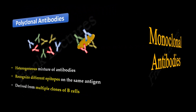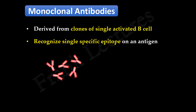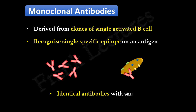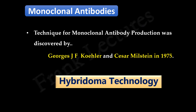Today we will study monoclonal antibodies. As the name reflects, monoclonal antibodies are derived from the clones of a single activated B cell. So these antibodies will recognize and bind only one particular epitope on an antigen. We can also say that monoclonal antibodies are identical antibodies with the same specificity. The technique of production of monoclonal antibodies was discovered by Georges J. F. Köhler and César Milstein in 1975. This technique is known as hybridoma technology.